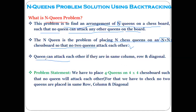We know the constraint: when two queens can attack each other. A queen can attack another if they are in the same column, same row, or on the same diagonal. This acts as a constraint in order to solve the N-queen problem.